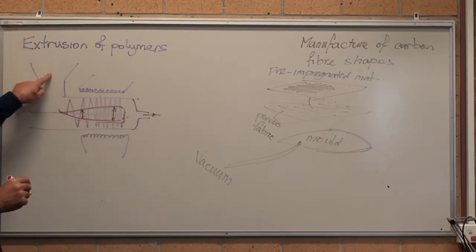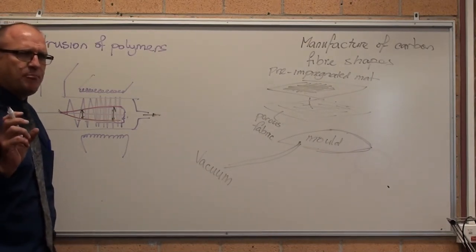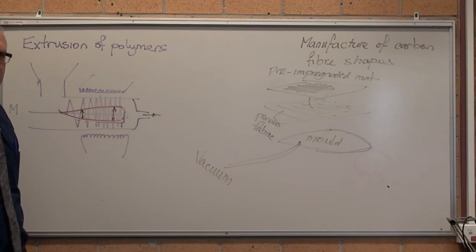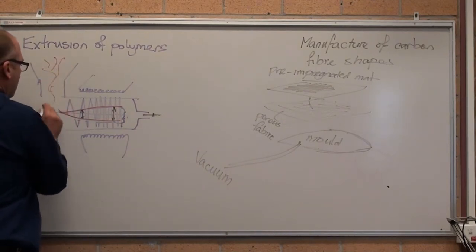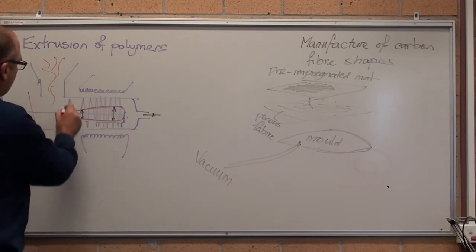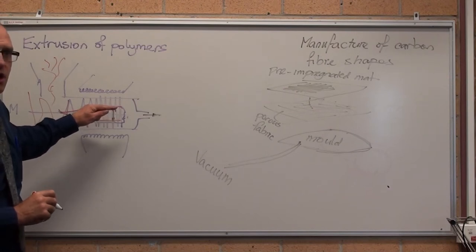Extrusion of polymers works exactly the same way. It feeds in little pellets of polymers about 6mm round and 10mm long. They just get fed in a hopper, kind of like baked beans, that a screw picks up and feeds into the extrusion machine.